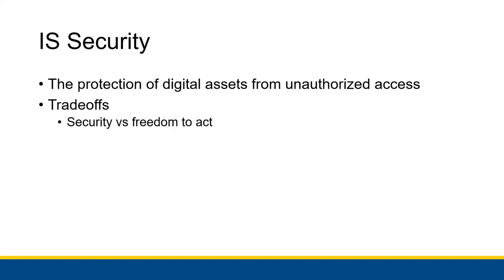The biggest trade-off — the one that typically defines security — is the trade-off between security and freedom to act. If you have a secure system, you can't just do anything you want. You can't access any data you want or do things whatever way you want. Security is going to come with very specific procedures that people have to follow. It comes with a restriction of access — a lot of stuff designed to protect the information system, which means you're not free to do whatever in a secure system.